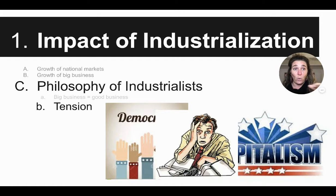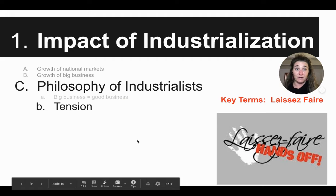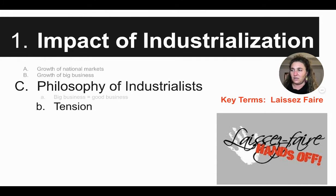We see this tension that develops between the political idea of a democracy and the economic system here in the United States, because democracy's goal is based on equality — everybody's voice is equal. But capitalism is really based on competition: who's doing the best, who has the biggest company. So you don't see that equality play out in the economic system. True capitalism relies on what's called laissez-faire economics. Laissez-faire means 'hands off' or 'leave it alone' — it's a French term. This is really talking about the government: the government should not be involved in business or the economic system.